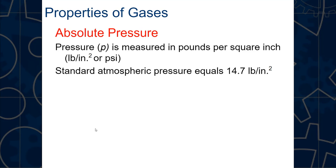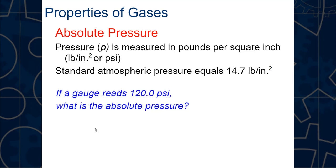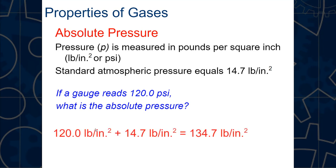Standard atmospheric pressure is 14.7 psi, which we add to whatever we read directly off the device to get absolute pressure. For example, if the gauge reads 120 psi, you add 120.0 psi plus 14.7 psi to get 134.7 psi absolute pressure.